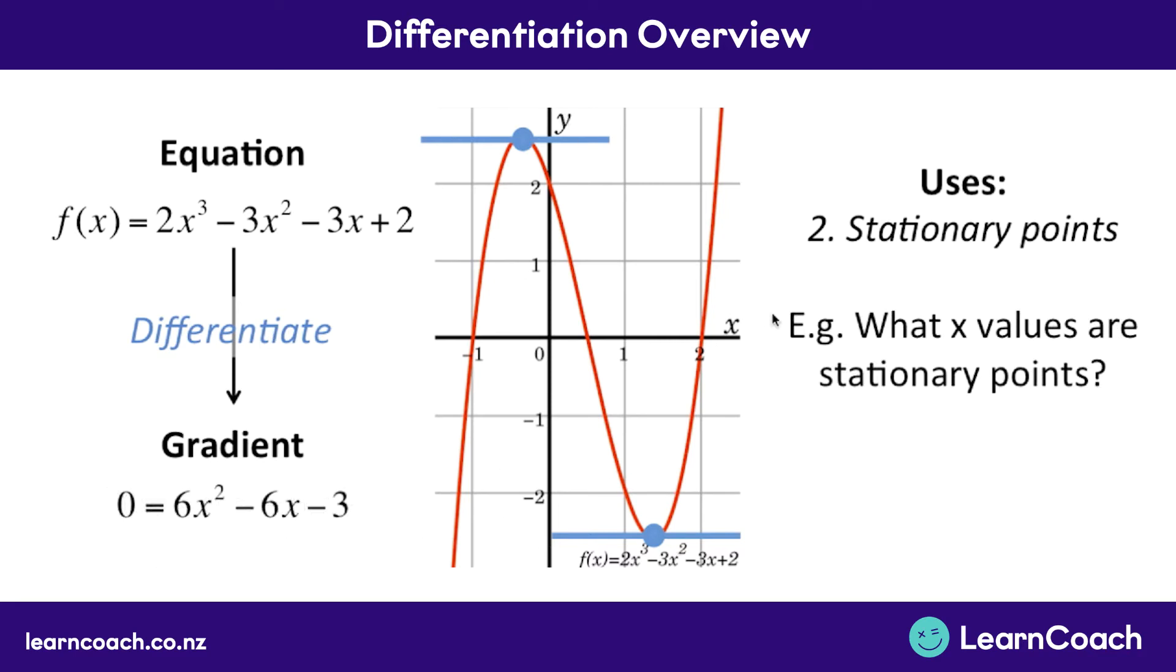So for this graph here, if we wanted to find out what x values are stationary points, we set our equation to zero, we put it into our calculator or into Google, and we solve it. That would give us x equals negative 0.37 and x equals 1.37.